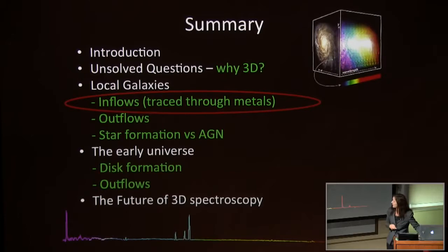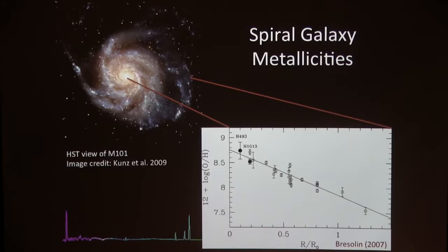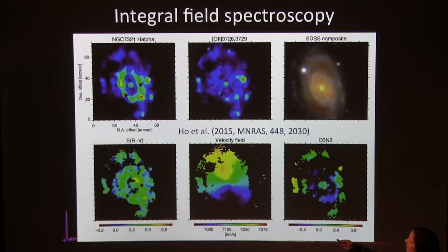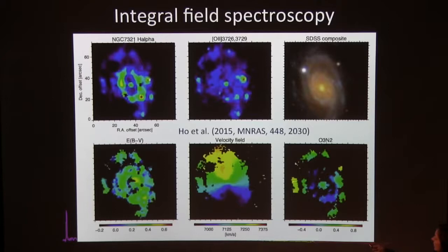First, we're going to talk about inflows traced through metals. In a spiral galaxy, you have a typical large metallicity gradient — it falls from the central regions to the outskirts. With integral field spectroscopy, we don't just get metallicity per radius; we get a metallicity map. This shows H-alpha and oxygen-2 maps, and here is a metallicity map based on the oxygen-3 and nitrogen-2 line. You can see metallicity changes from outer to inner regions, and there's some structure — for example, a particle of gas with a reasonably high metallicity.